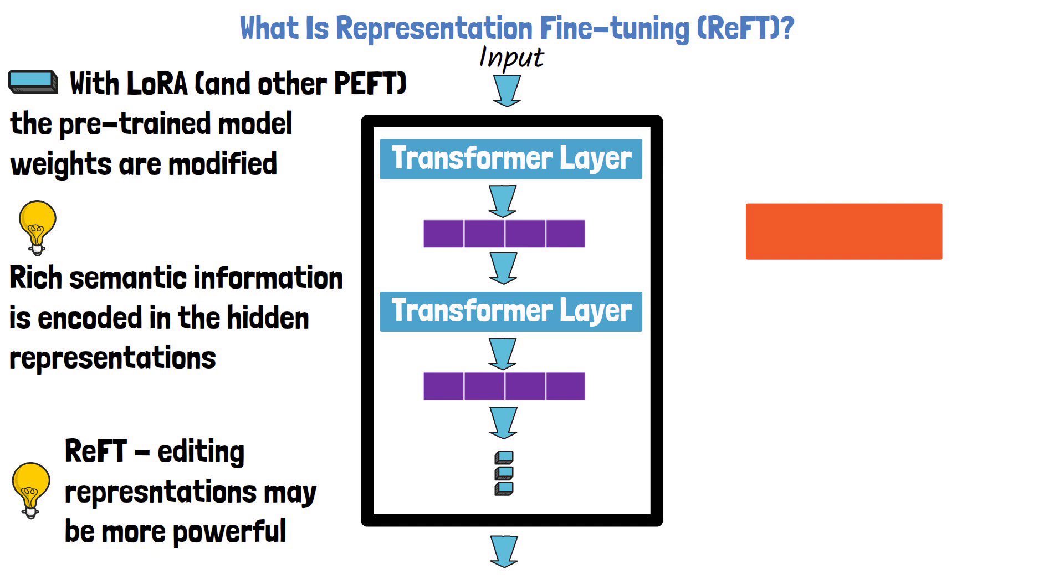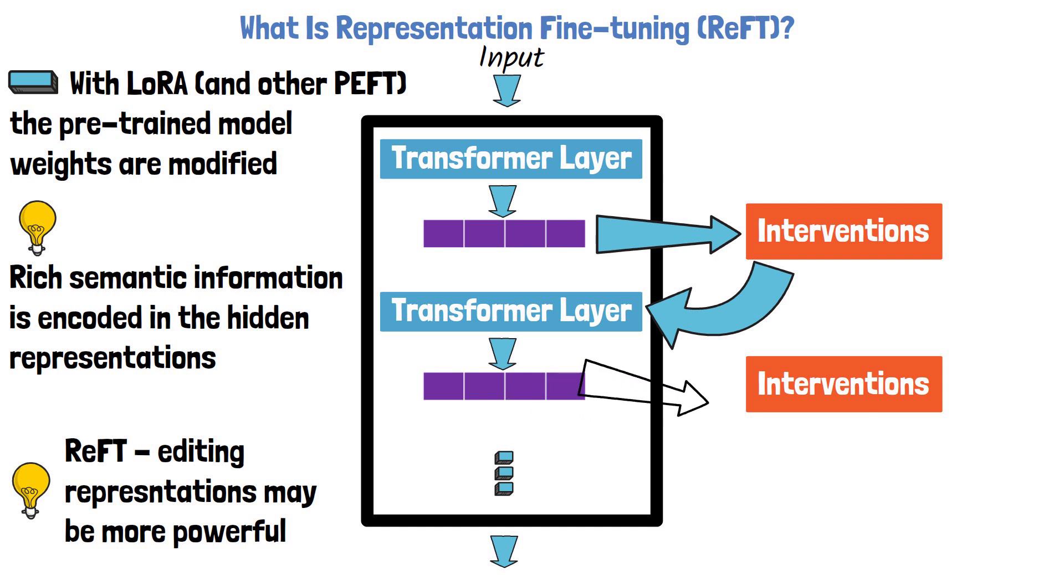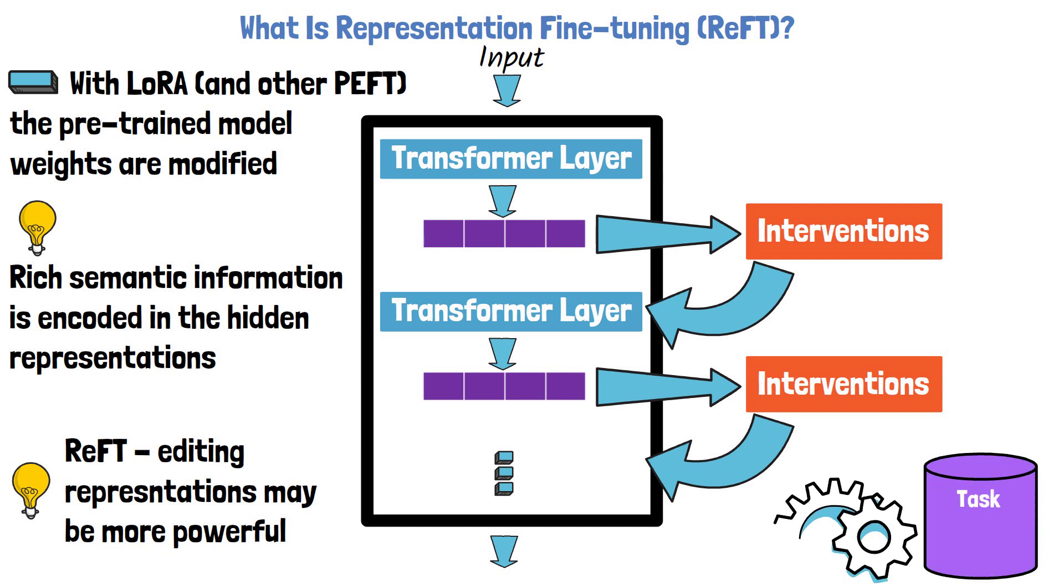The way it is being done is via interventions. What does it mean? After we get hidden representations vectors from each transformer layer, before passing them directly to the next layer, we pass the hidden representations via interventions. The interventions are small components with their own weights that we train to edit the representations to work better for specific tasks.